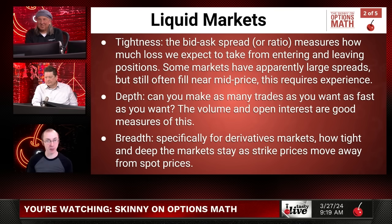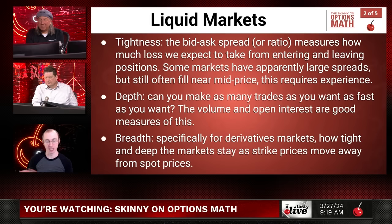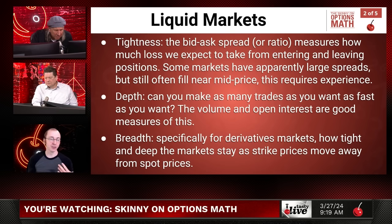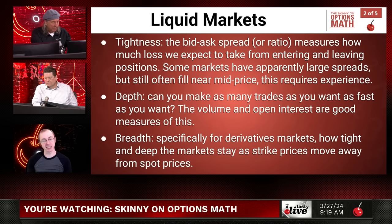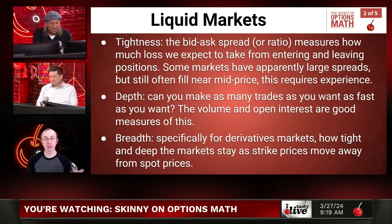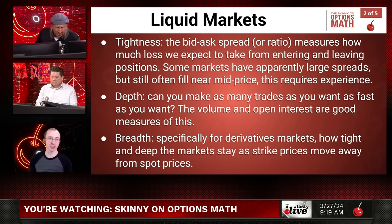Tightness is usually visible in the bid-ask spread. The bid-ask ratio - dividing the ask by the bid - is a little bit more meaningful than subtracting the bid from the ask, because it adjusts for product size. How many percent difference are they rather than just dollars and cents. Either way, the key idea is that the spread, the difference between bid and ask, tells you how much you expect to lose if you want to enter and exit positions rapidly, which is an attractive thing to be able to do. There is one caveat where there can be a little bit of deceit in how the sheets look, because some underlyings have large-looking spreads, but if you know about them, you know that you'll still get filled near mid price even though the bid and the ask look like they've got a decent amount of distance between them. That requires some experience watching the market and seeing which underlyings are popular.